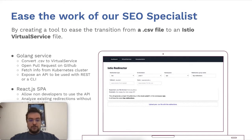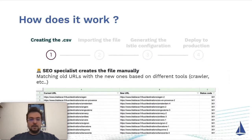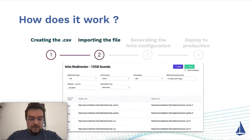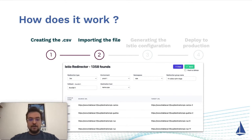The SEO specialist will use the web application, which is really easy to use. Your SEO specialist will have a CSV file with all the current URLs and the new ones and a specific status code — for example 301 for permanent redirection, but it can be any 300 redirection or even 400 redirection. Once the CSV is saved, it can be imported in the UI and the application will take care of parsing the file and showing all the redirections that have been detected.